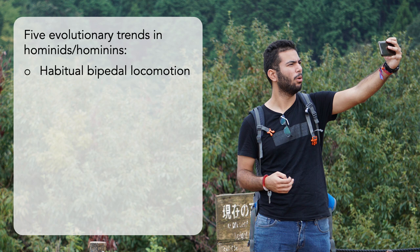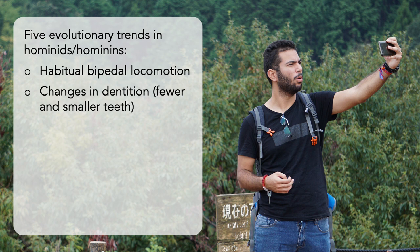We're also seeing changes in dentition. Generally, we're seeing a reduction in the size of the front teeth, especially the canines, while the molars or cheek teeth increased in size before everything was scaled down even further. And instead of a rectangular box-like layout, the teeth became aligned in a parabolic arc.